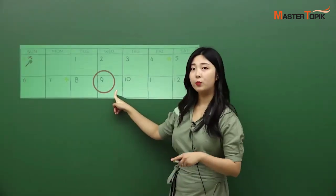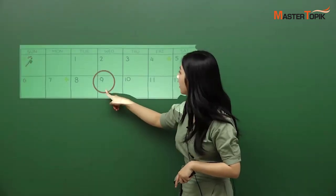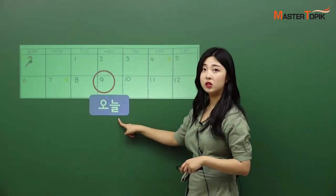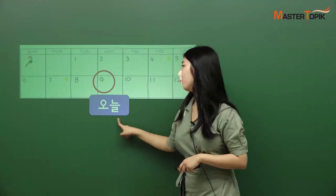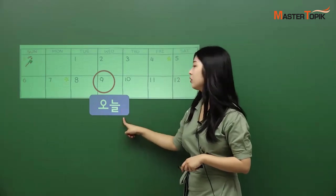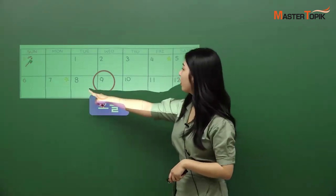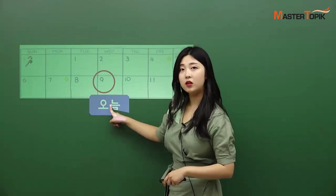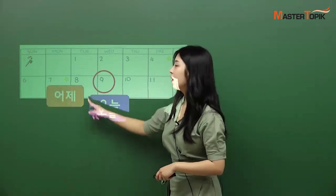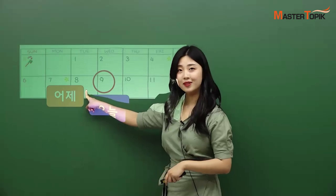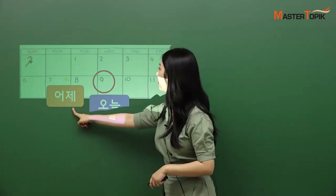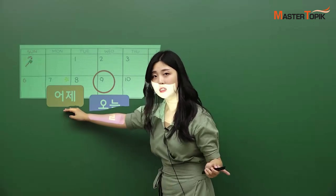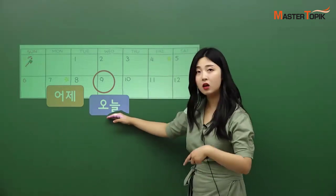Suppose today is Wednesday the 9th — then it is 오늘. 오늘 means 'today.' What about Tuesday the 8th — the day before today? It is 어제 — yesterday. So, 어제 is the past and 오늘 is the present.